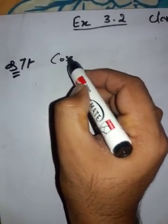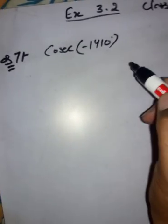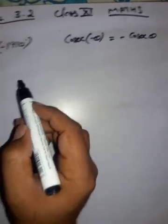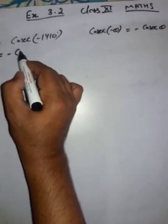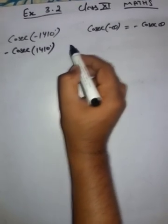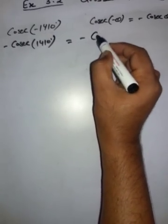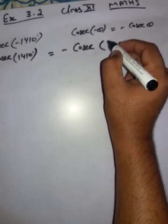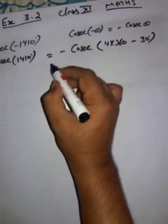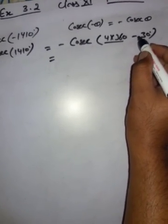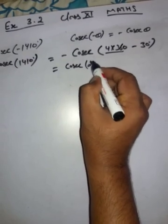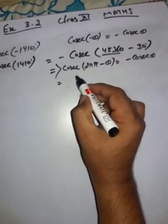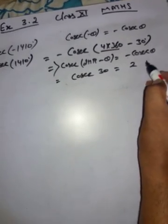Question 7: cosec(-1410°). Using cosec(-θ) = -cosec θ, we write -cosec(1410°). Now 1410° = 4×360° - 30°, which is of the form 2nπ - θ. Using cosec(2nπ - θ) = -cosec θ, the two negative signs cancel, giving cosec 30° = 2. That is the answer.